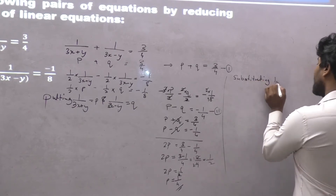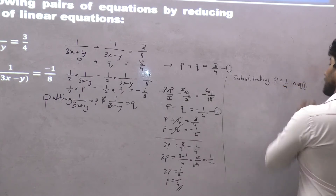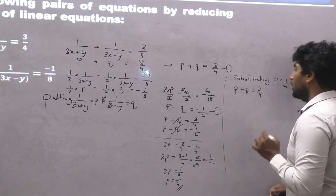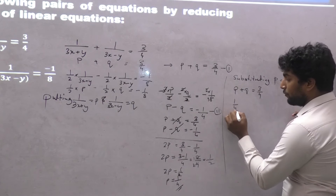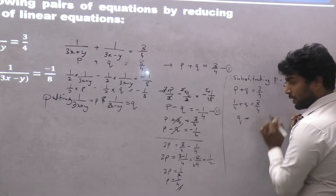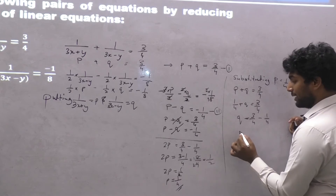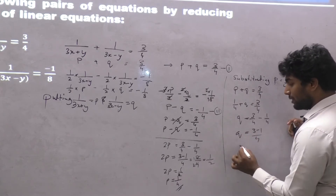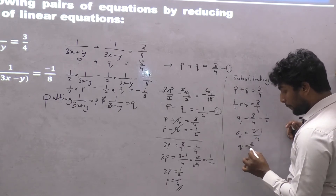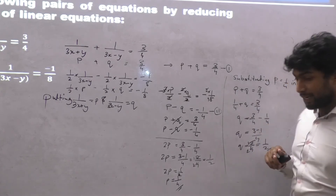Substituting p equals 1 upon 4 into equation 1: rewriting equation 1 as p plus q equals 3 upon 4, I get 1 upon 4 plus q equals 3 upon 4. So q equals 3 upon 4 minus 1 upon 4, which is 2 upon 4, which simplifies to 1 upon 2. So the value of q is 1 upon 2.